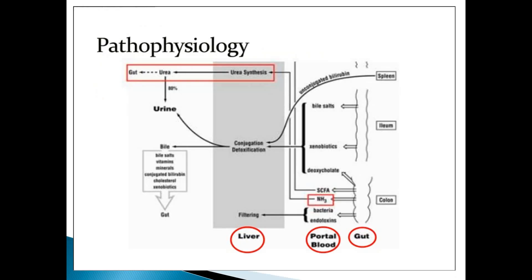The pathophysiology: the liver is deranged because its metabolic functions are completely disrupted — carbohydrate, protein, fats, everything. The proteins which are catabolizing release ammonia, which should be converted into urea via the urea cycle, but that pathway is not functioning. The ammonia is liberated and goes into the brain, crosses the blood-brain barrier, and depresses brain functions. This is the basic pathophysiology of this disease.